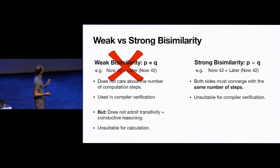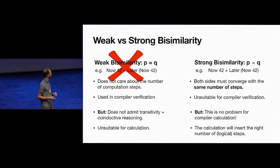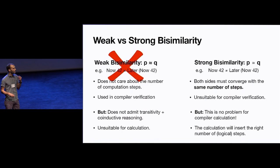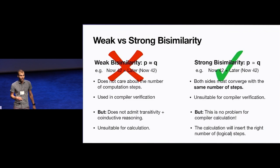Strong bisimilarity has the problem that it's very strict — we only expect that both computations take the same number of steps, so `now 42` is not strongly bisimilar to `later (now 42)`. This makes it seem completely hopeless for verification. But as it turns out, this is not a problem for calculation, because the calculation process will not only produce the compiler — it will also produce the semantics of our target language, inserting just the right number of `later` steps so that the source and target language match up. So we go with strong bisimilarity.